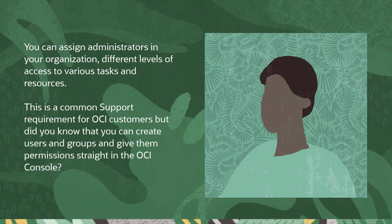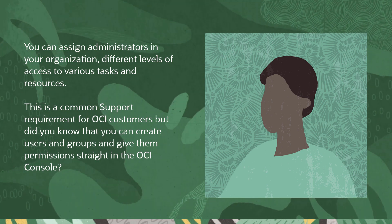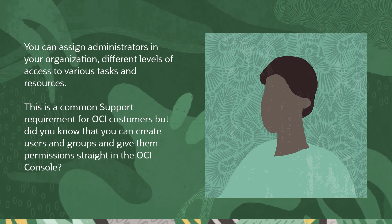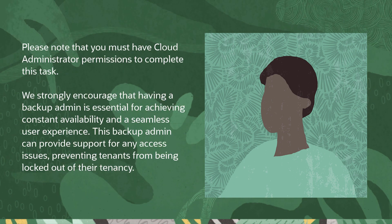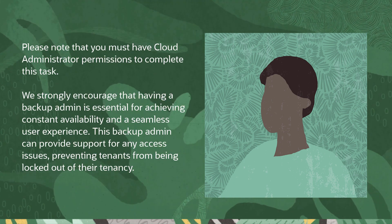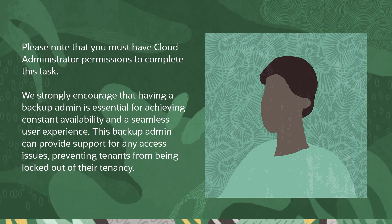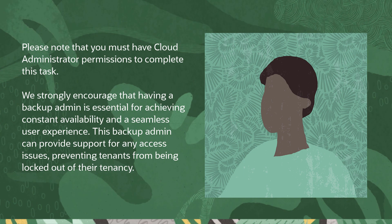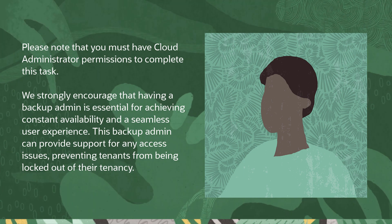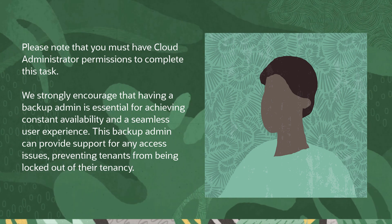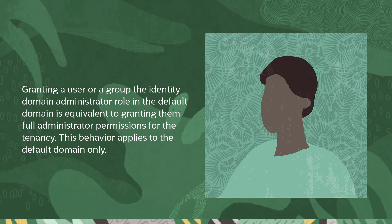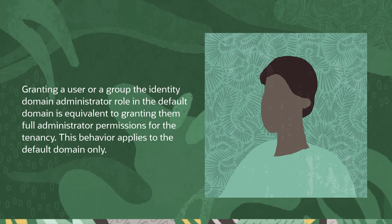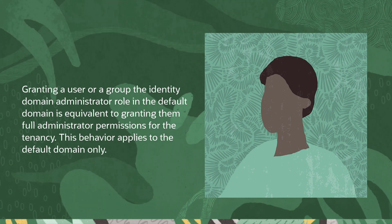You can assign administrators in your organization different levels of access to various tasks and resources. You can create users and groups and give them permissions straight in the OCI console. Please note that you must have cloud administrator permissions to complete this task. We strongly encourage having a backup admin, as it is essential for achieving constant availability and a seamless user experience. This backup admin can provide support for any access issues, preventing tenants from being locked out of their tenancies. Granting a user or a group the identity domain administrator role in the default domain is equivalent to granting them full administrator permissions for the tenancy. This behavior applies to the default domain only.